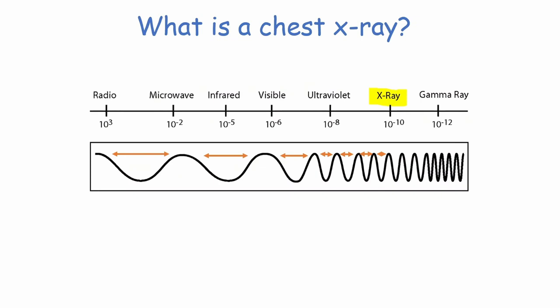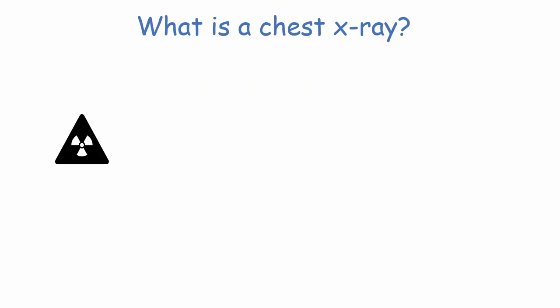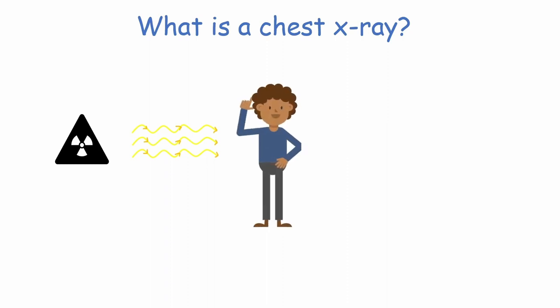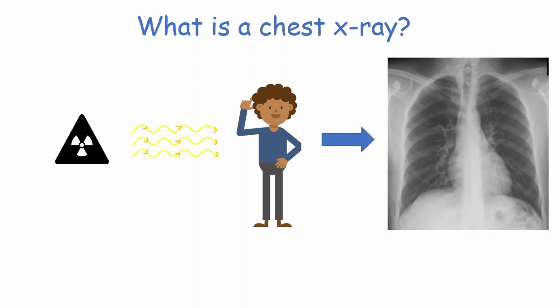So how do X-rays create an image that we can see? First off, an X-ray source is aimed at a patient's body. A detector on the other side of the patient can then pick up the X-rays as they pass through the body tissue or are partially absorbed. Using computer programming, the detected X-rays can then be put into an image.